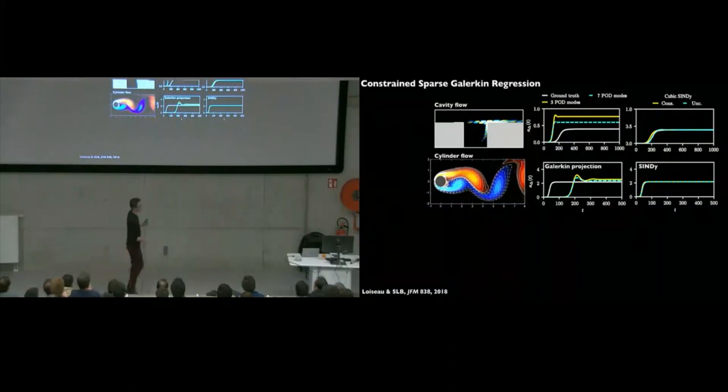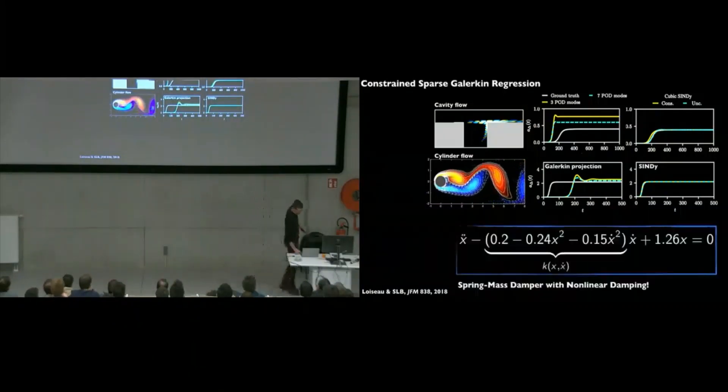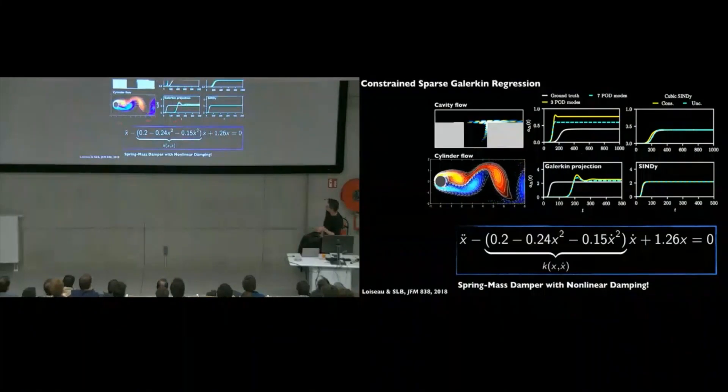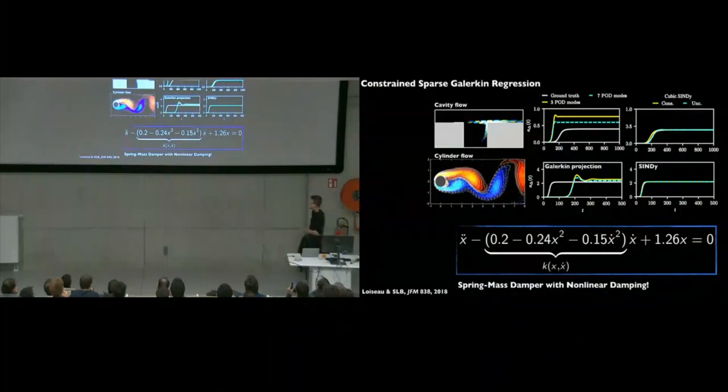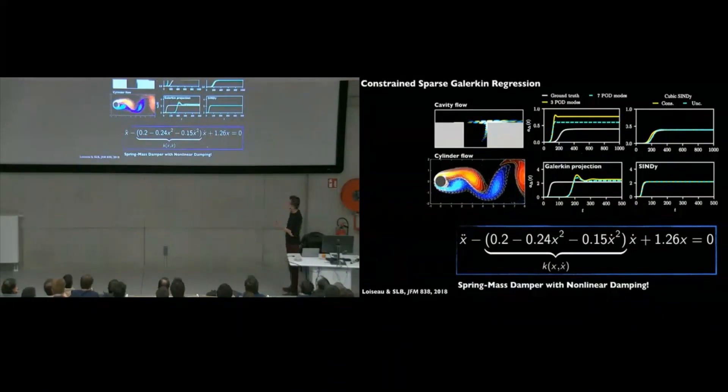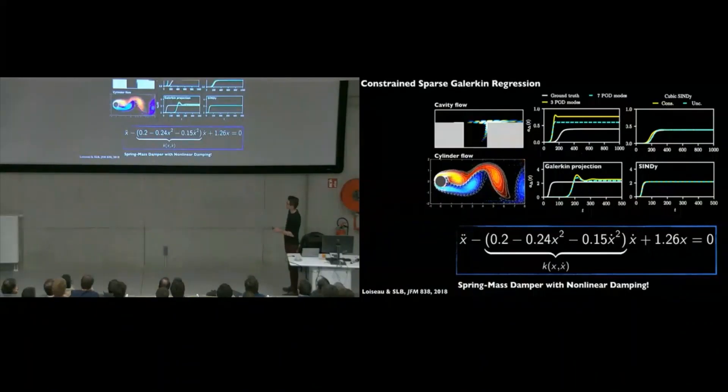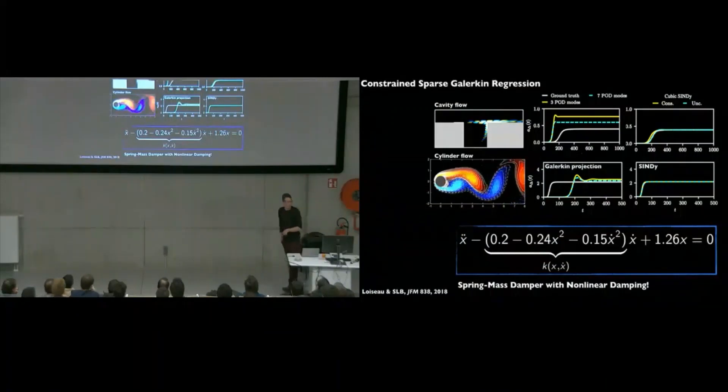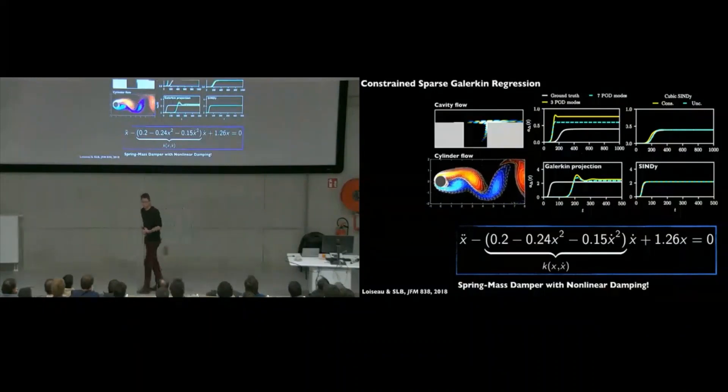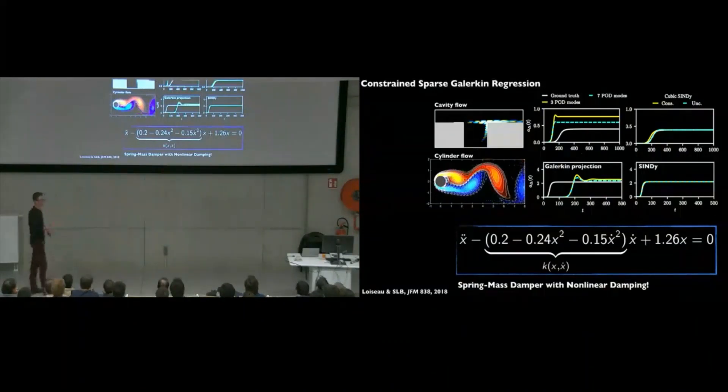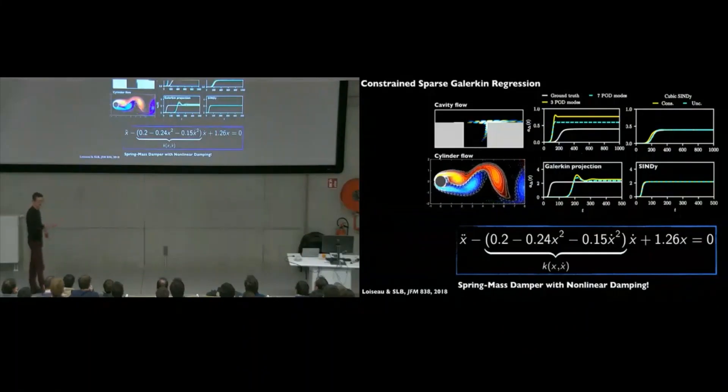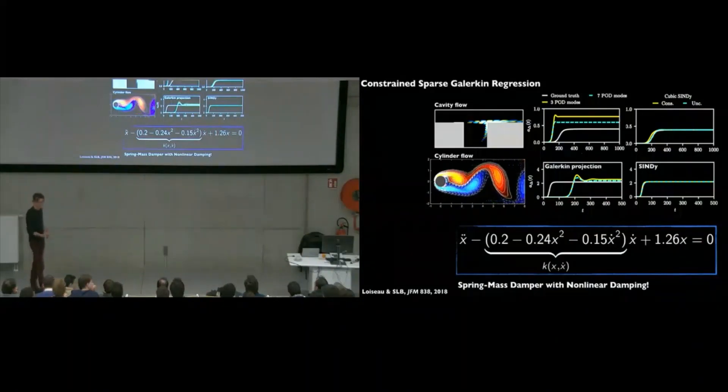But I really think that the energy conservation is the coolest part about this. And so JC was able to write down a very simple model. This is the model he got for the cylinder after developing this all. In terms of his two-mode model, this is the simplest model I've ever seen for flow past a cylinder. It is a spring mass damper with nonlinear damping. It's essentially a Van der Pol oscillator. Remarkable. And it's more accurate. That's crazy.